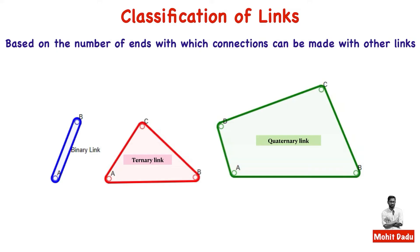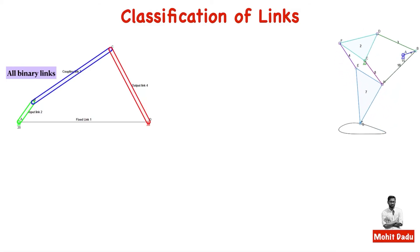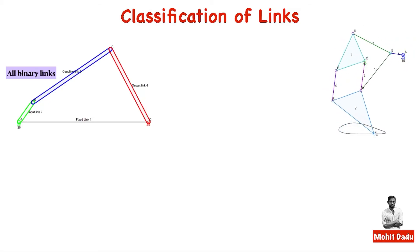In the four-bar mechanism shown earlier, all links are binary links — the fixed link connects with the input link at one point and the output link at another. In a more complex mechanism, the links numbered 2 and 7 are ternary links with three connection points or nodes. If link 7 is drawn separately, it clearly shows three connection points where it can connect to nearby links.